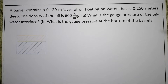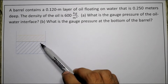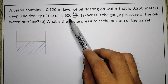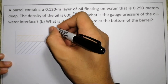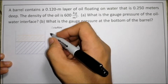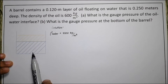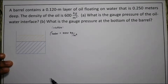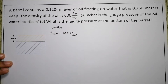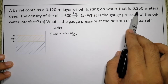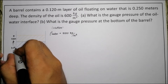To solve this problem, we have a drawing showing the barrel. The oil is less dense compared to water — the density of oil is 600 kg/m³ while water is 1,000 kg/m³. So water goes down and oil is on top. The oil layer is 0.12 meters from the surface, and the water below is 0.25 meters deep.